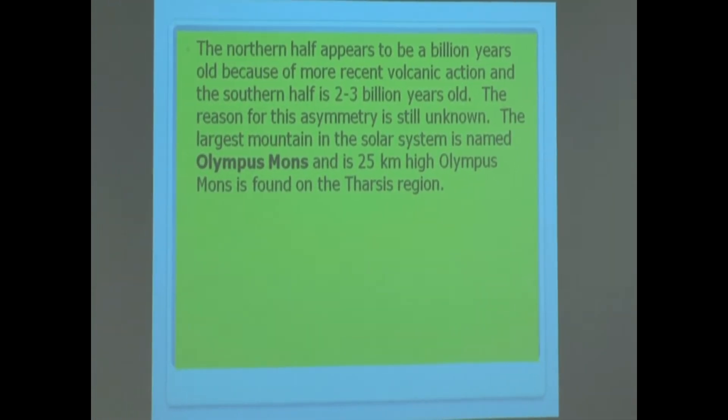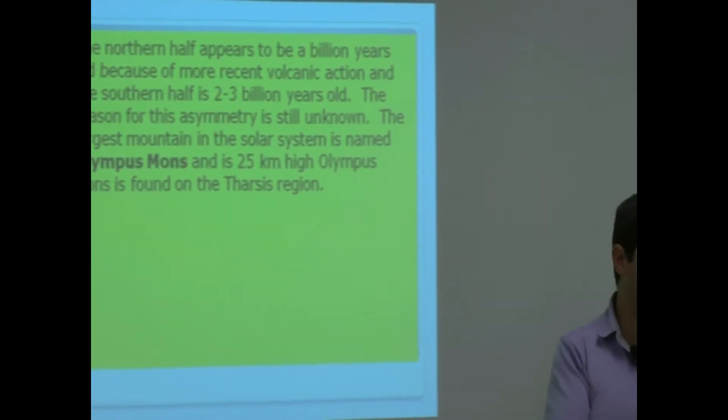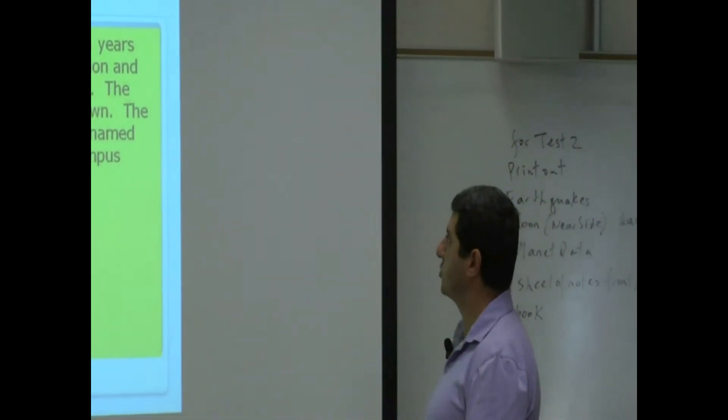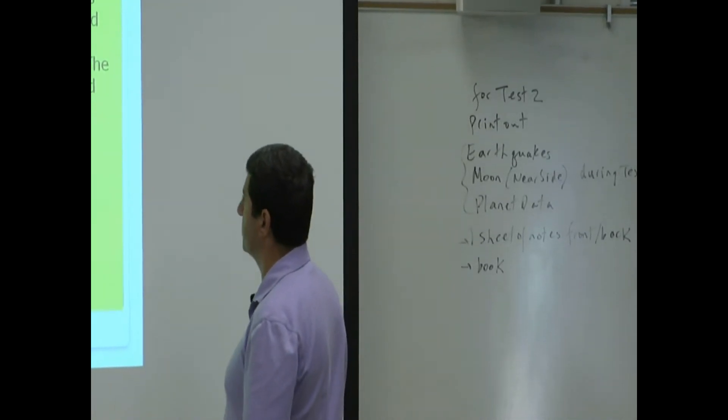The largest mountain in the solar system is named Olympus Mons. It's even larger than Venus's mountain, Maxwell Montes. And it's 25 kilometers high. Olympus Mons is found on the Tharsis region.